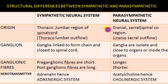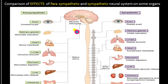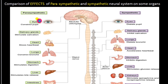By the antagonistic properties of the sympathetic and parasympathetic neural systems, they bring homeostasis in the body. In this lesson, we are going to learn about the effects of the parasympathetic and sympathetic neural systems on some organs. The parasympathetic system is an inhibitory system and the sympathetic system is an excitatory system.